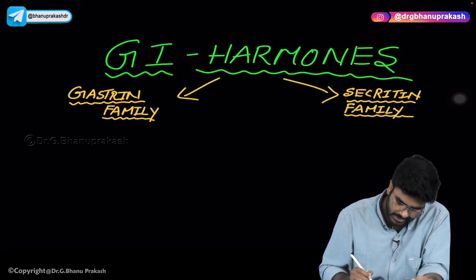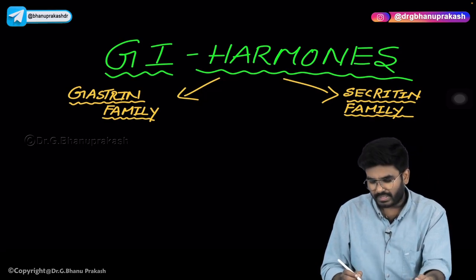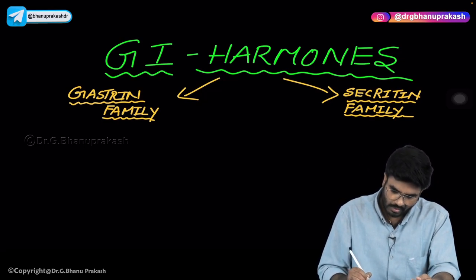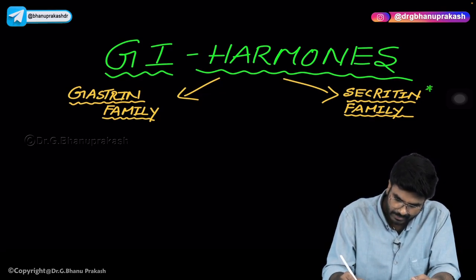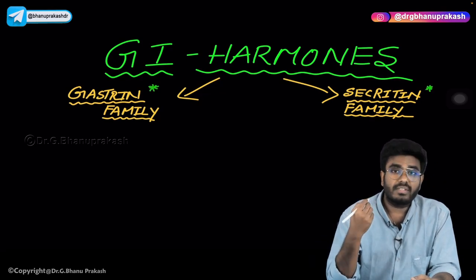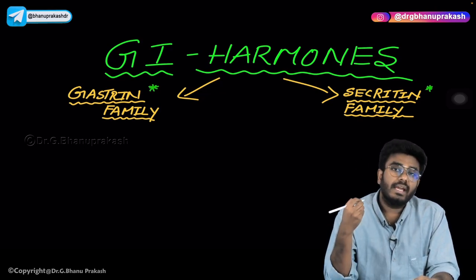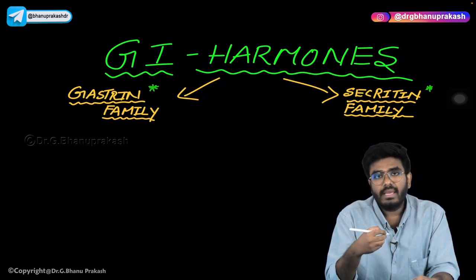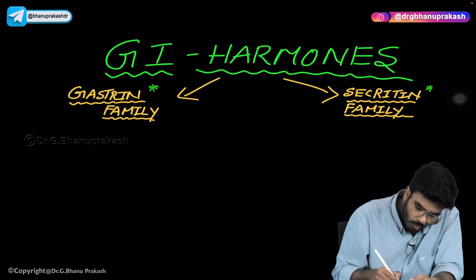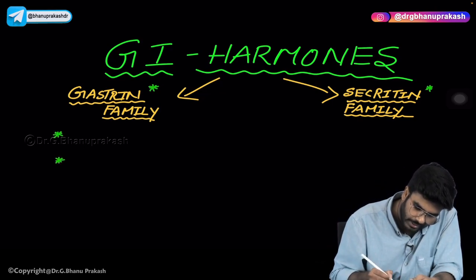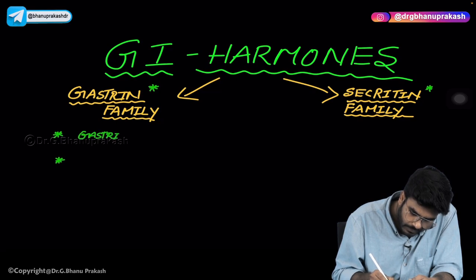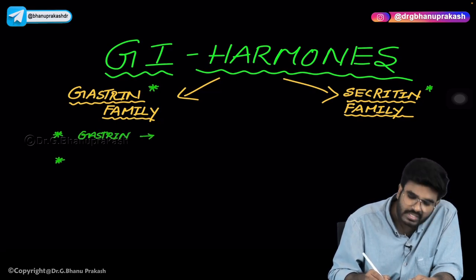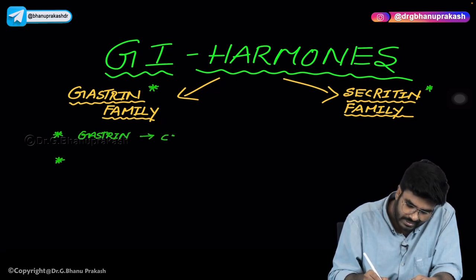Let's discuss some GI hormones. The GI hormones are mainly classified into two types based on the type of receptor they use: the secretin family and the gastrin family. The gastrin family includes gastrin, which uses the CCKB receptor.